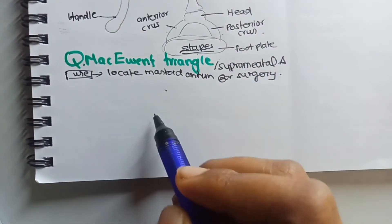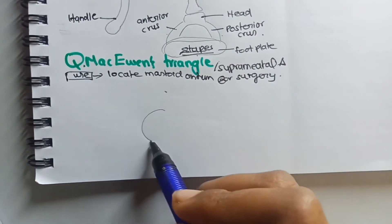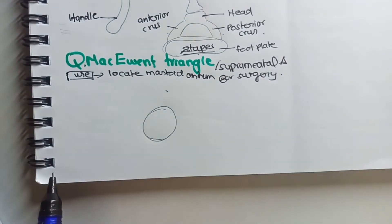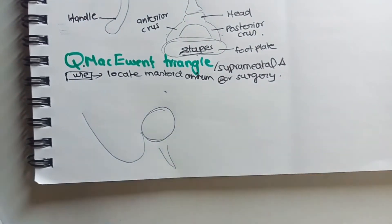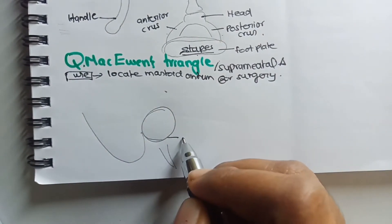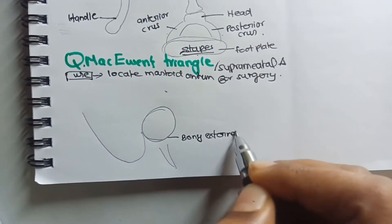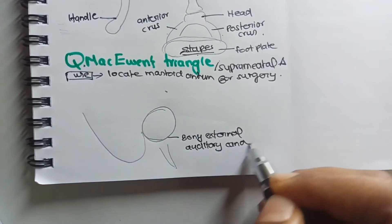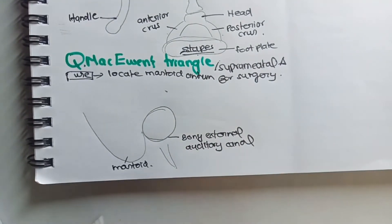So how can we locate the triangle? First of all, let us draw the bony external auditory canal and the mastoid. So this is the bony external auditory canal, and this is the mastoid.